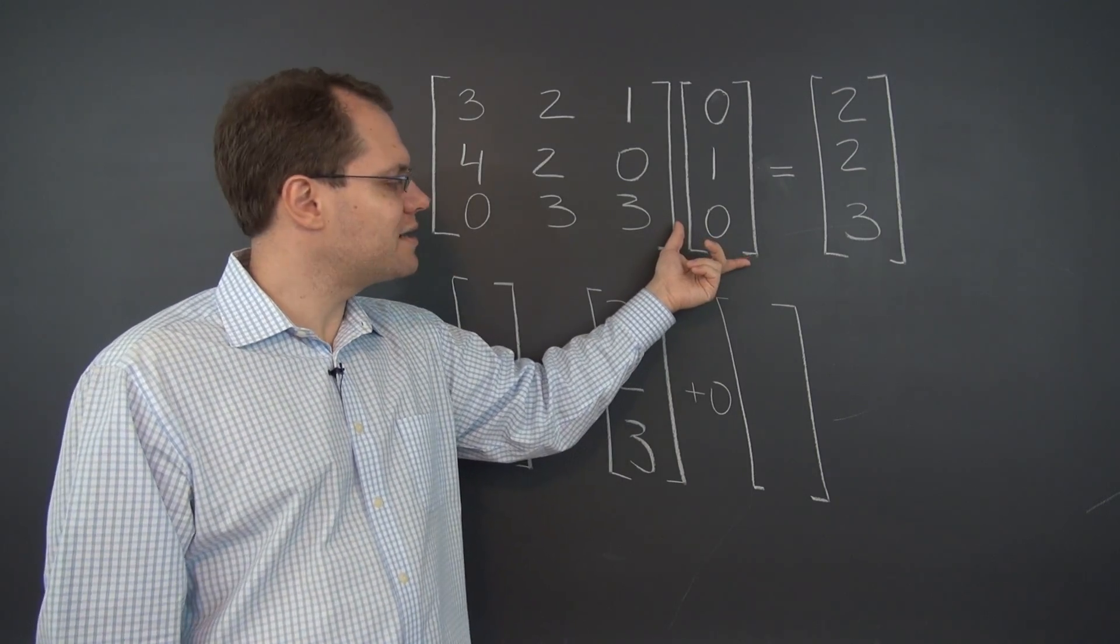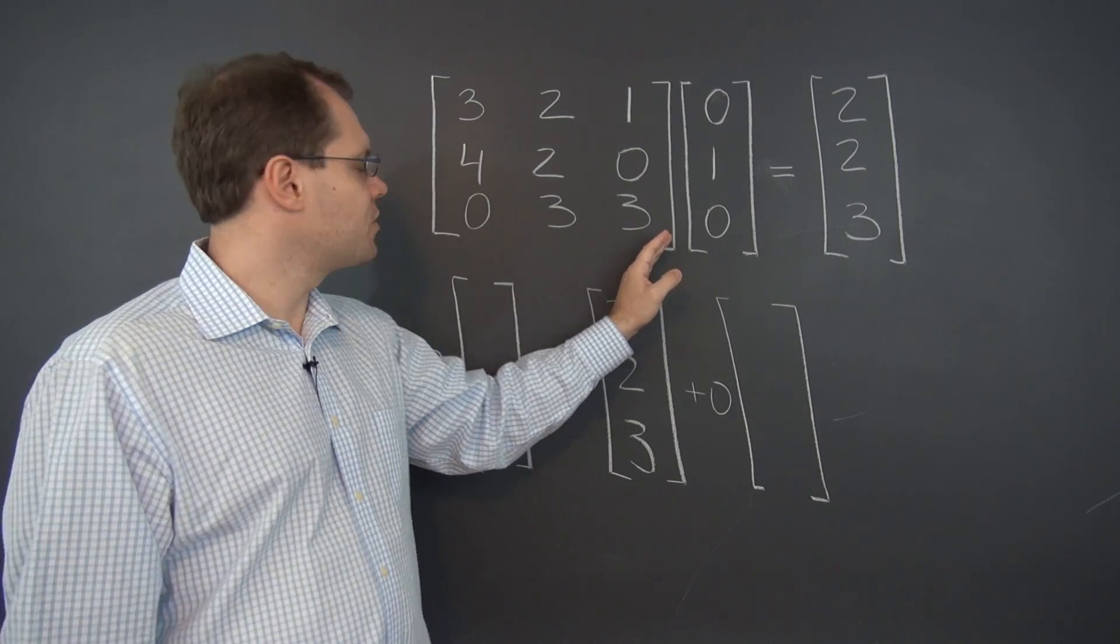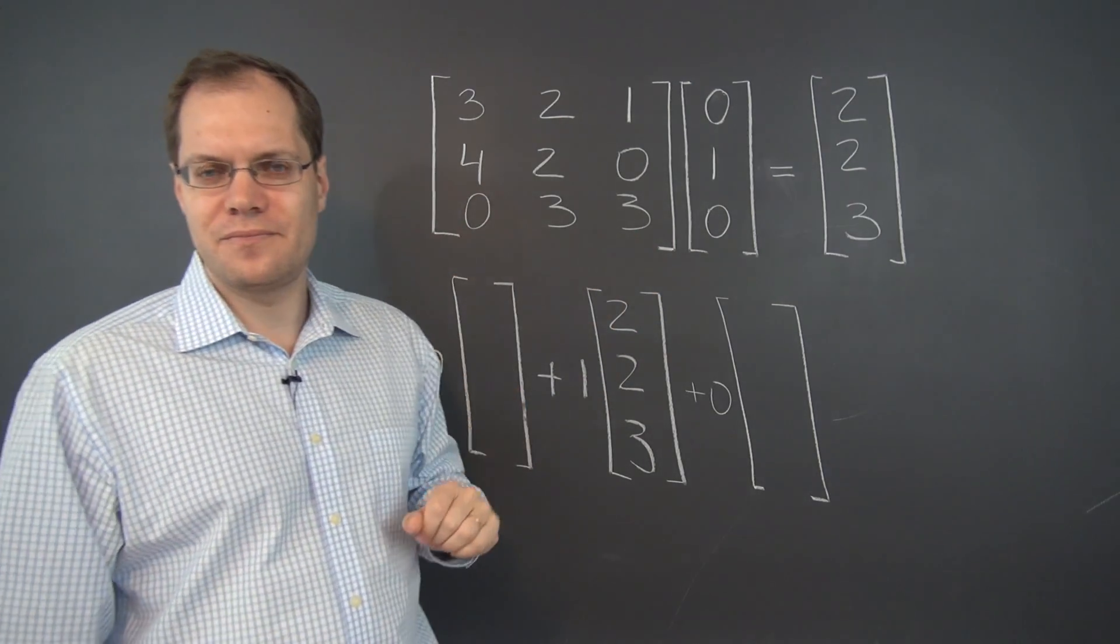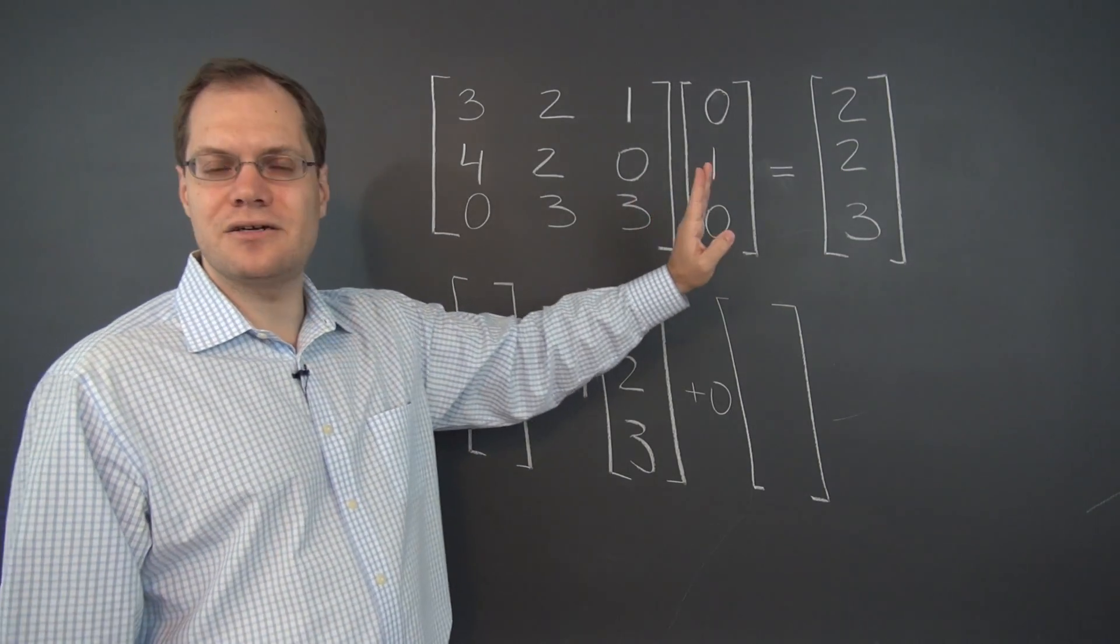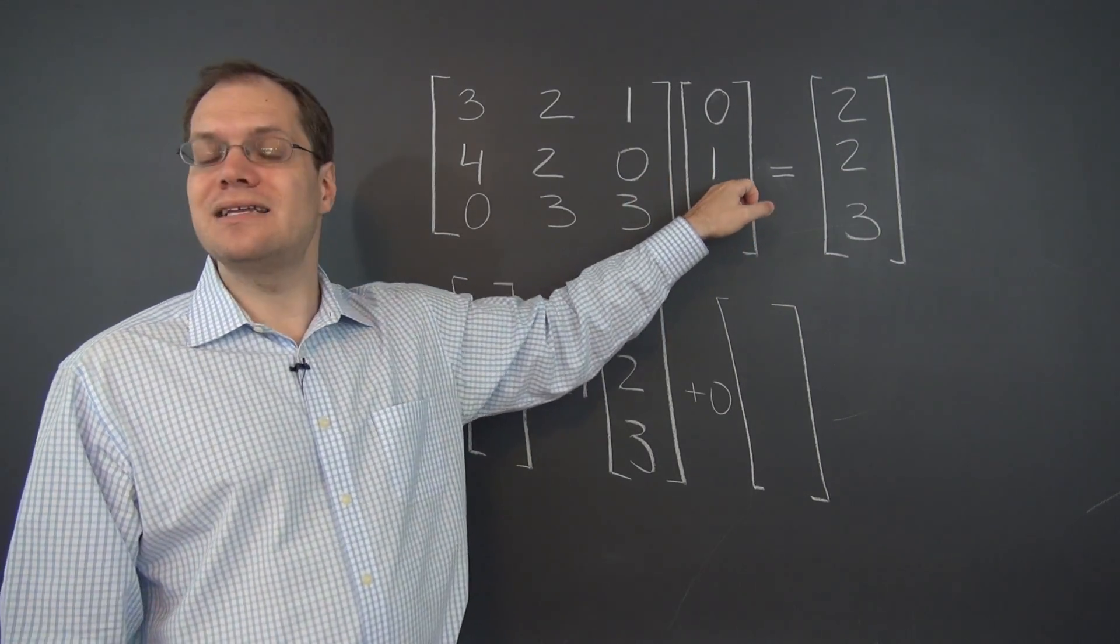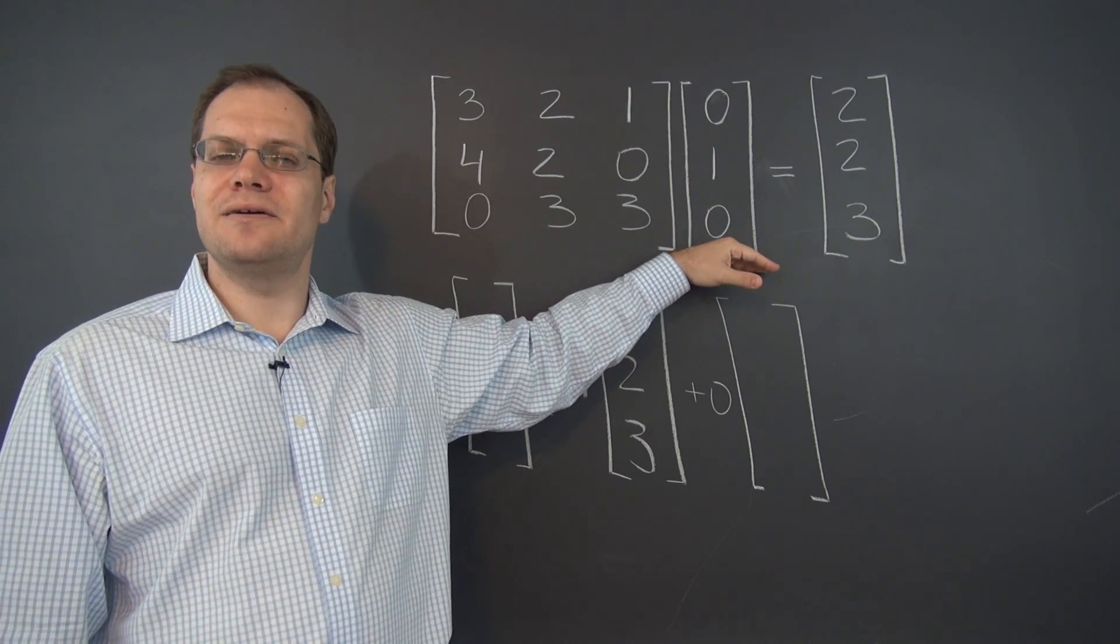It will pick the second column no matter what 3x3 matrix I put here, or even 10x3, which would have also been compatible. The answer will be the second column. This vector is the column picker.